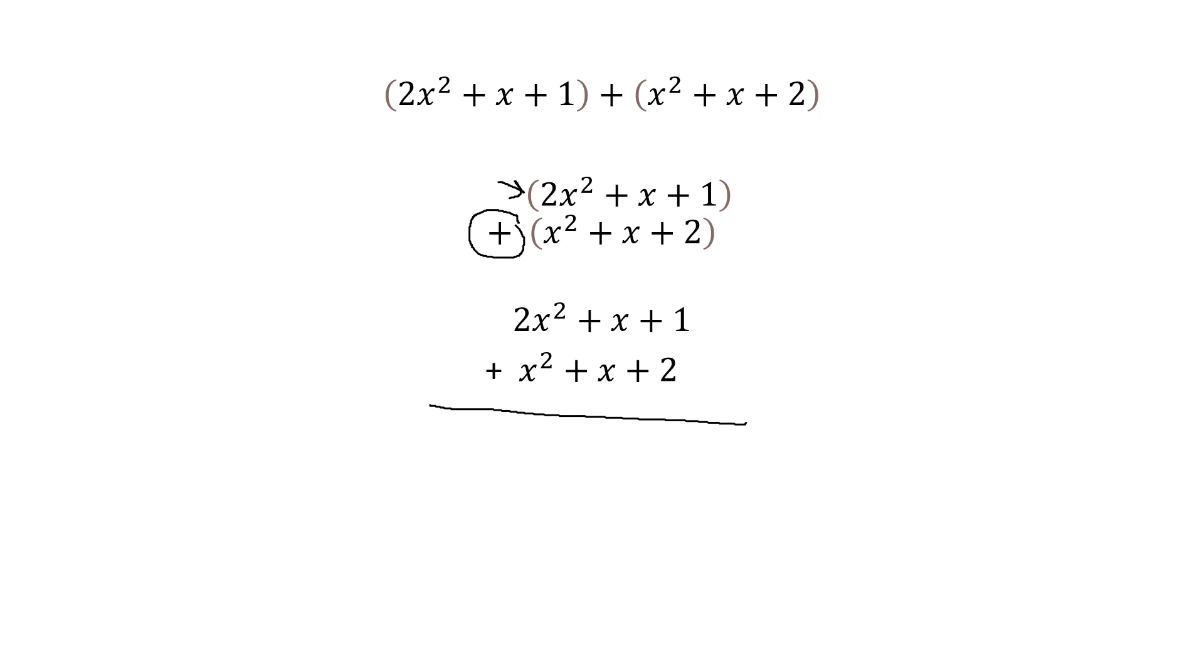So now we just add down. One plus two is, well, what's on the left? 2x squared plus x. Don't forget the understood. One. x plus x is 2x. One plus two is three. And there's your answer.